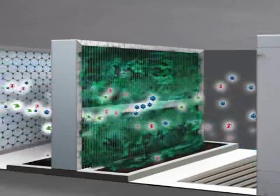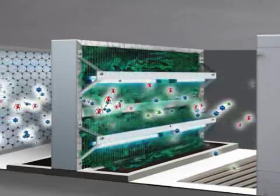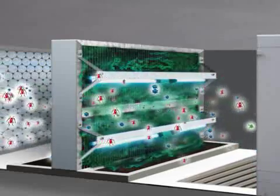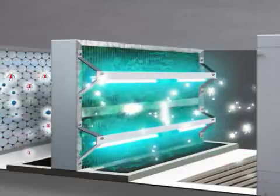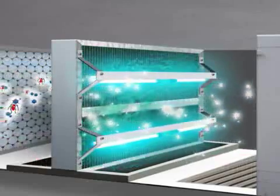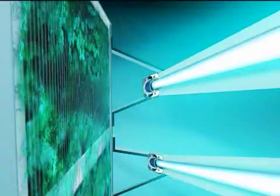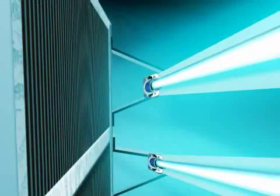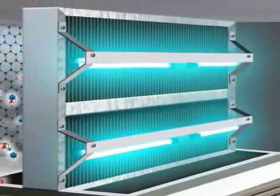The good news, unless you are mould, is that Sterile Air has developed new efficient UV emitters and patented the positioning of them on either side of the coil. These emitters kill and remove the mould and bacteria growing in the coil, leaving the coil and drain pans clean.